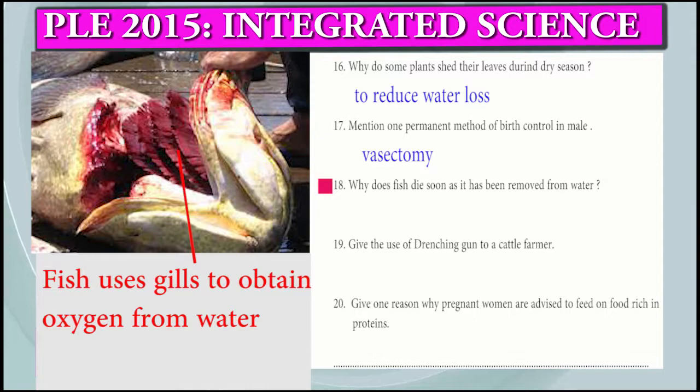Question 18: Why do fish die after being removed from water? Due to lack of oxygen. Fish get oxygen from water, so when removed, they cannot obtain oxygen.